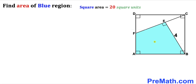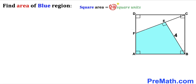In this video we have got a blue shaded quadrilateral fully confined in a square ABCD, such that one of the side lengths EB is 4 units and moreover the area of this square is 20 square units. Now we are going to calculate the area of this blue shaded quadrilateral.